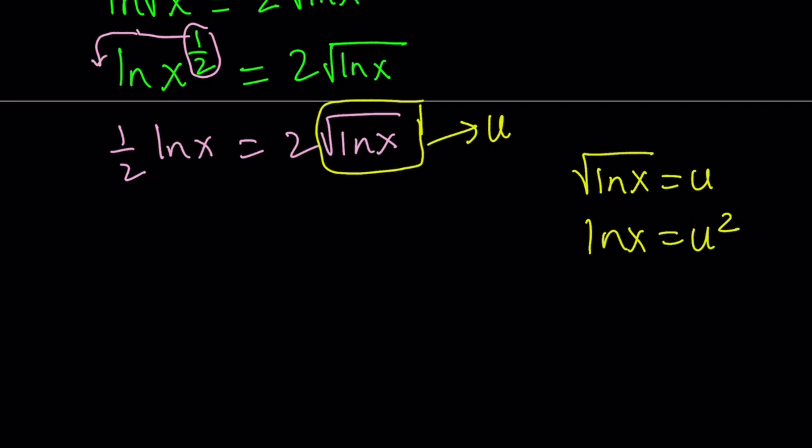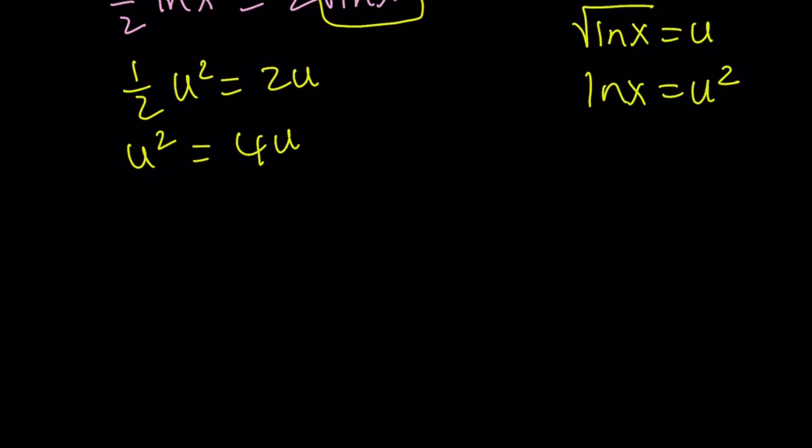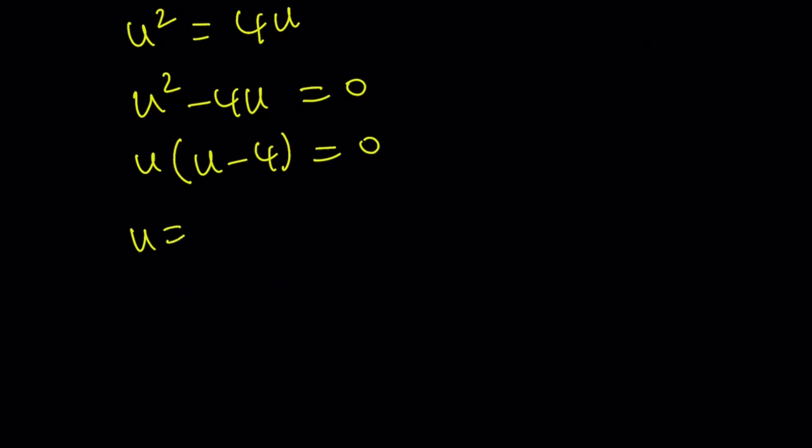Then we get the following. 1 half of u squared equals 2u. We can go ahead and multiply both sides by 2. u squared equals 4u. And then we can put everything on the same side. u squared minus 4u is equal to 0. Take out a u. u minus 4. You know the drill. u equals 0 or u equals 4.